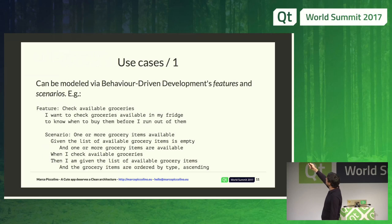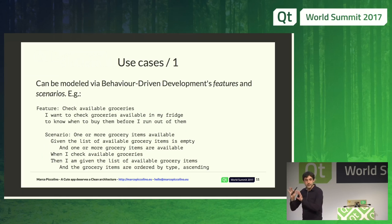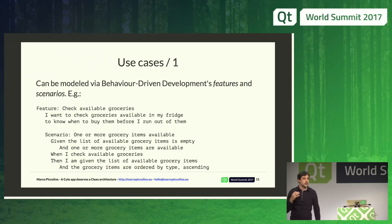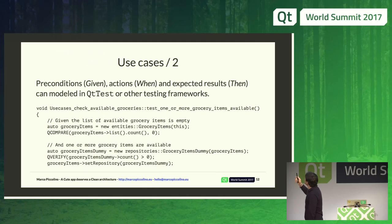Given that the list of available grocery items is empty, and I actually know I do have something in the fridge, when I check the available grocery items, then I should be given a list of available grocery items ordered by type. This kind of description is also understandable by non-technical people — it is plain English. You have preconditions (givens), actions (whens), and expected results (thens).